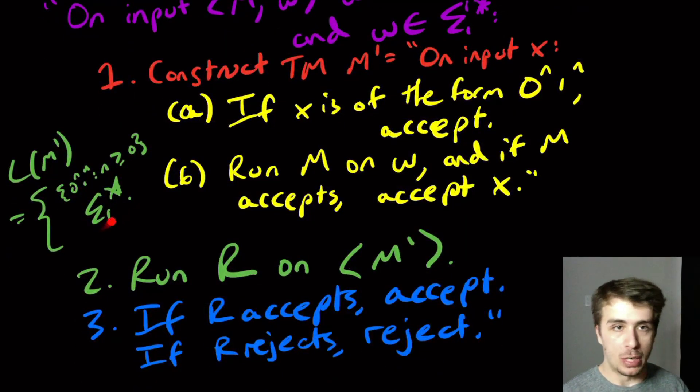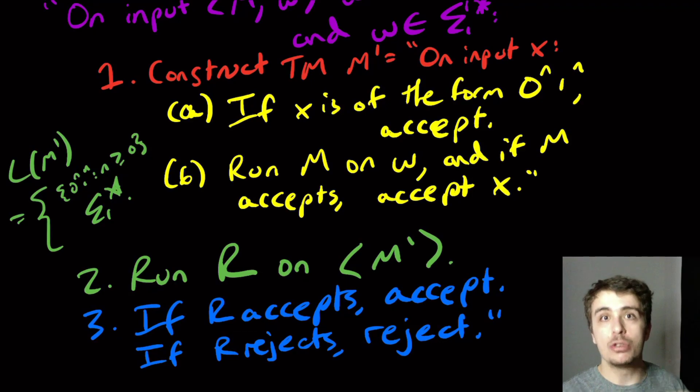Because sigma star is also context-free, but 0^n 1^n 2^n, where N is at least zero, is not context-free.